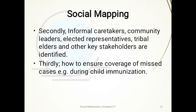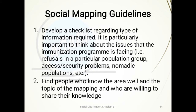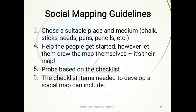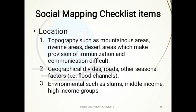Thirdly, social mapping helps ensure coverage of missed cases, for example during child immunization. Social mapping guidelines include: develop a checklist regarding the type of information required, particularly around issues the immunization program is facing. Look for people who know the area well and the topic of mapping, and who are willing to share their knowledge. Choose a suitable place and medium, help people get started, but let them draw the map themselves — it is their map.